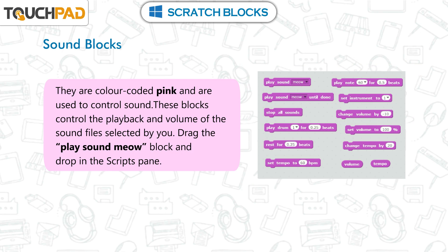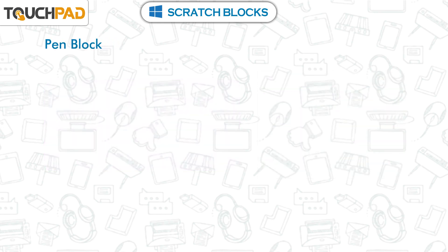Sound Blocks are color-coded pink and are used to control sound. These blocks control the playback and volume of the sound file selected by you. Drag the play sound meow block and drop it in the scripts pane.